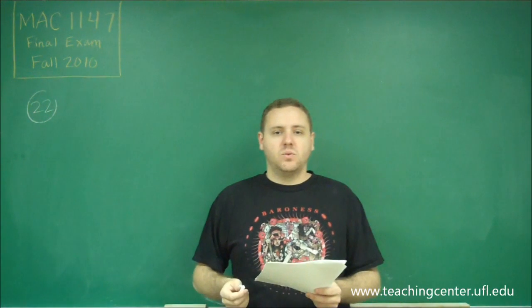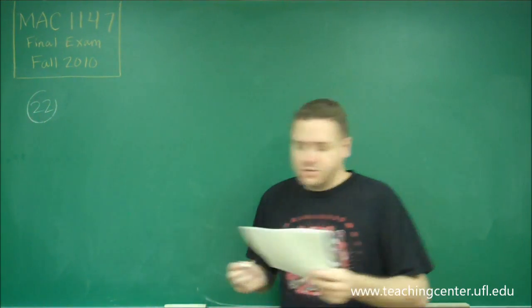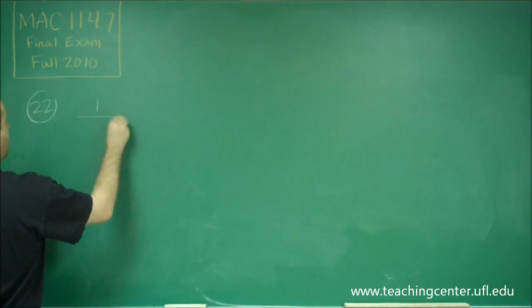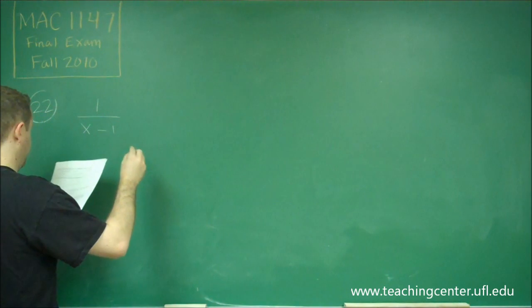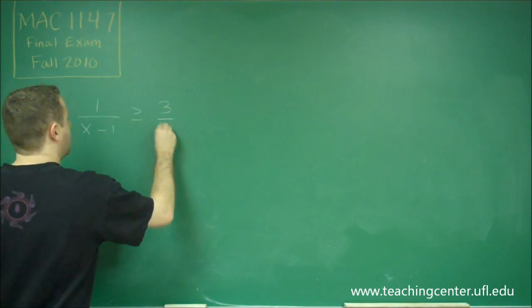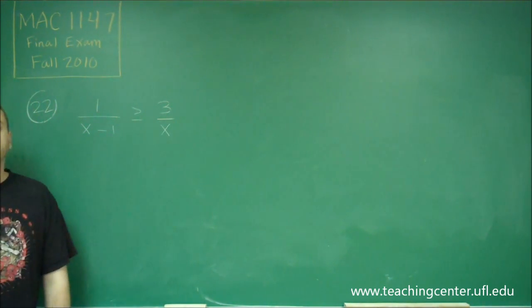Problem number 22, we have an inequality that we need to solve. We have 1 over x minus 1 needs to be greater than or equal to 3 over x.